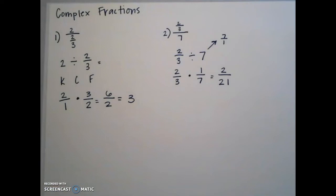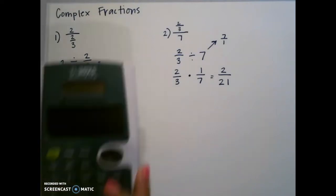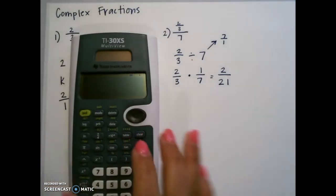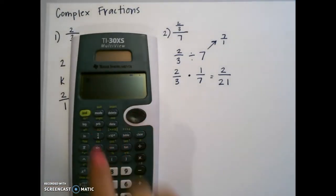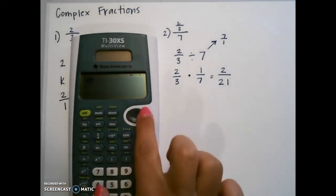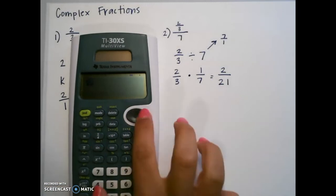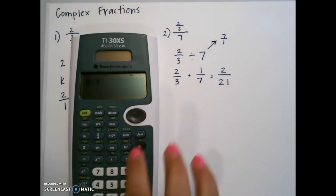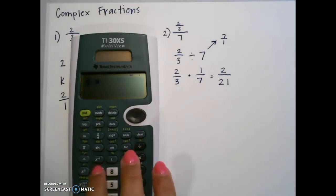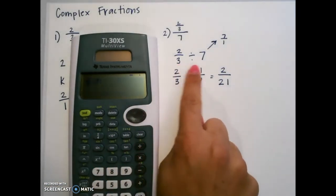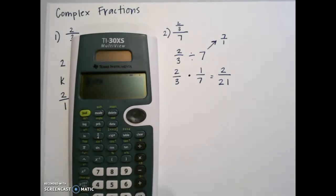If you have the calculator with the fraction function, you can simply plug into your calculator 2 thirds divided by 7, just like here, and that will give you the same answer: 2 over 21.